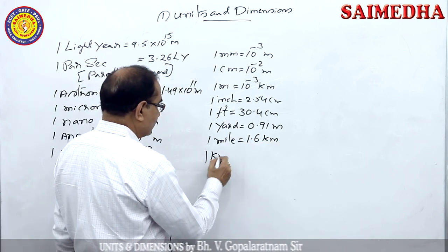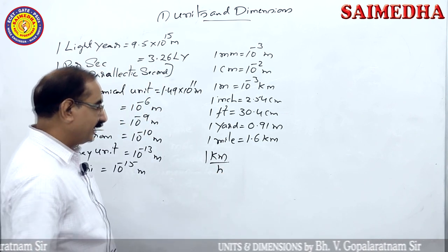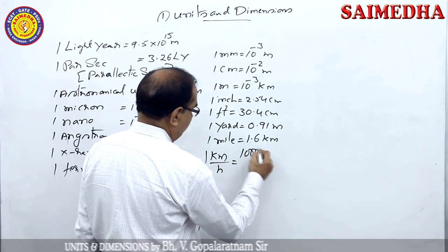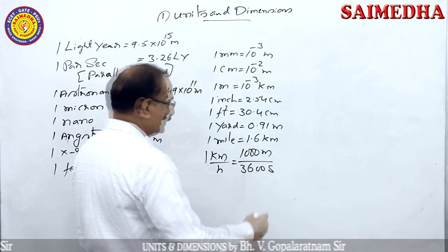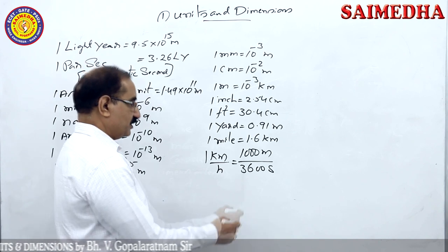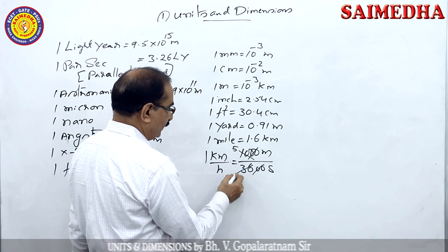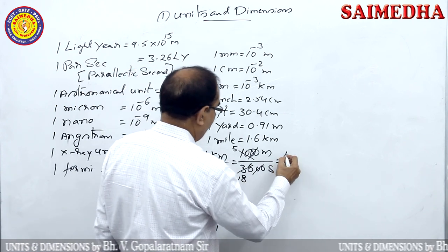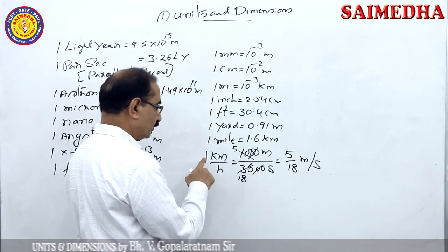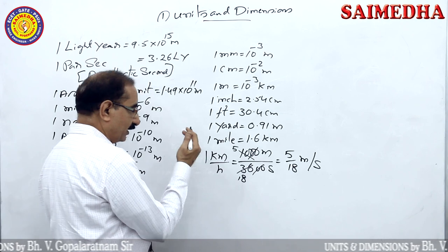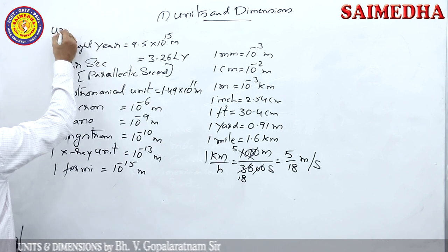To convert km/h to m/s — very important in kinematics: one kilometre per hour equals 1000 meters divided by 3600 seconds, which gives 5/18 meters per second. So 2 km/h equals 2 × 5/18 m/s, and 3 km/h equals 3 × 5/18 m/s. These are all units of length and speed.